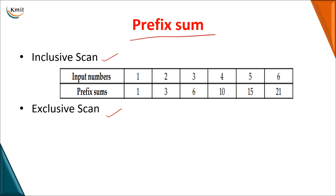In inclusive scan, you will be provided with a list of elements and the prefix sum will perform the summation of the elements including the first element. So the first element will be taken as it is, and when you go for the second element it is the summation of the previous two elements — that is the reason we call this a prefix. For any given element as output, you sum up all elements from the starting location up to that position.